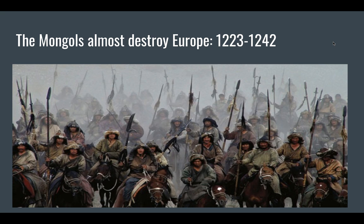Europe was lucky. From 1223 to 1242, they were invaded by the Mongols. The Mongols would actually conquer Russia and go into Eastern Europe and destroy much of that. At one point in 1242, they destroyed the largest army in all of Europe — the Hungarian army with over 100,000 men. Due to the death of their leader, they returned to Mongolia after 1242, and luckily for Europe, they did not return. Had they returned, they probably would have conquered all of Europe and we could have a very different history today.